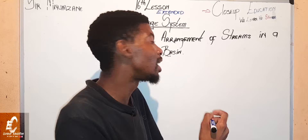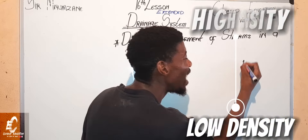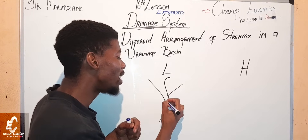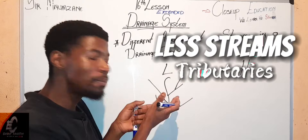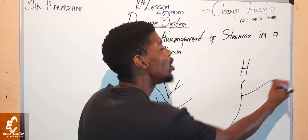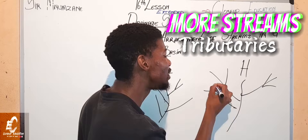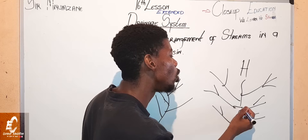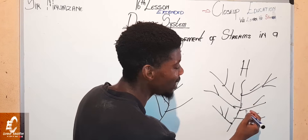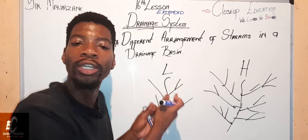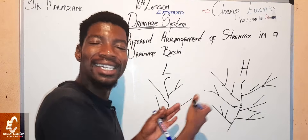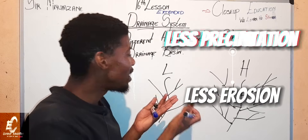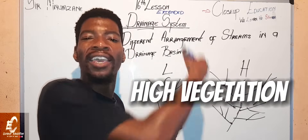Now let's move to drainage density, which simply means the number of streams found per drainage basin. We have low drainage density — a low number of streams — and high drainage density — a high number of streams. Low density means less precipitation, therefore fewer streams. There is also high vegetation, meaning water from precipitation is absorbed, and there is high infiltration. The area is gently sloped.